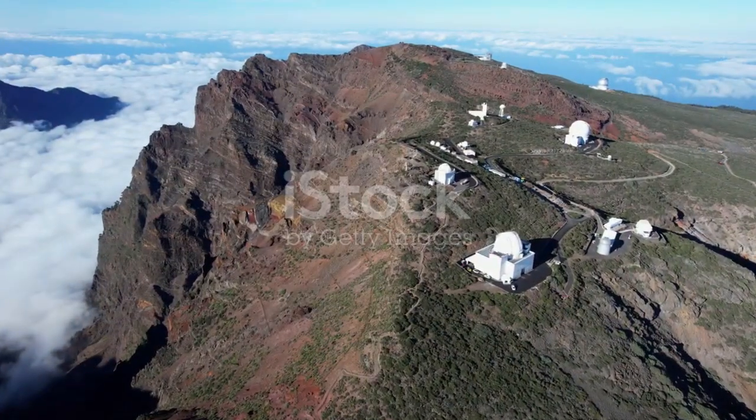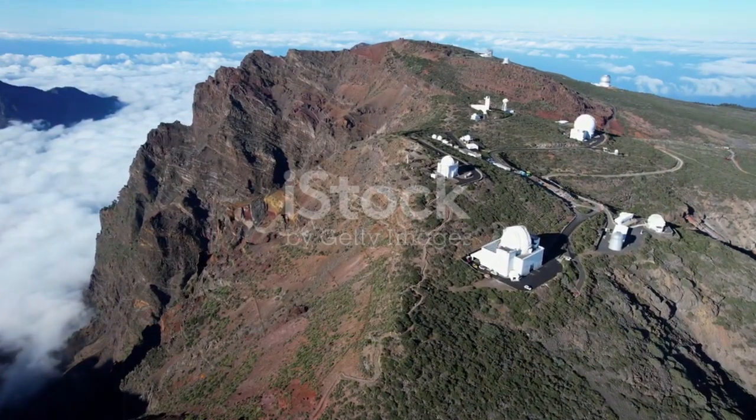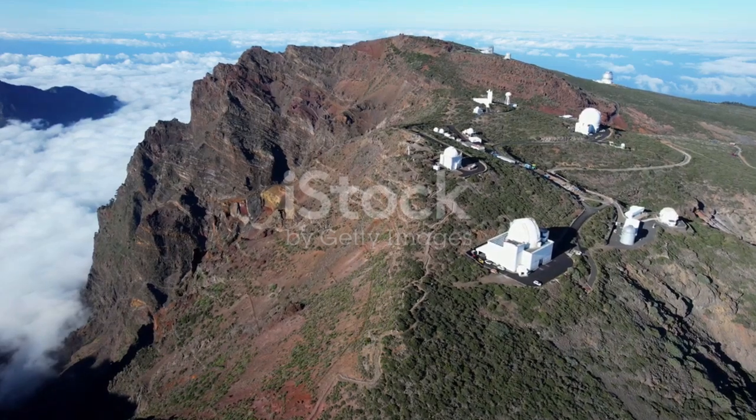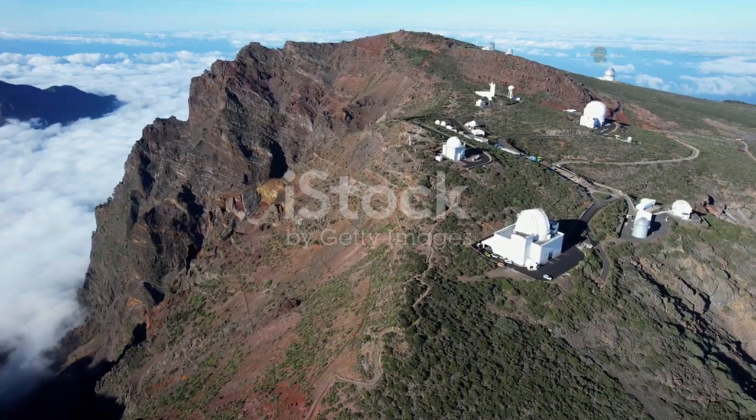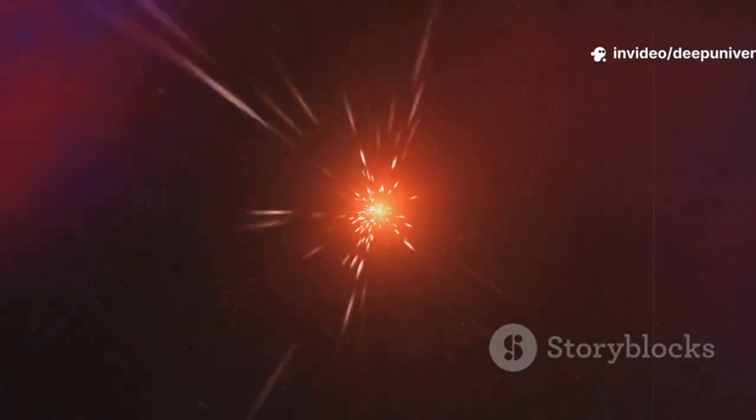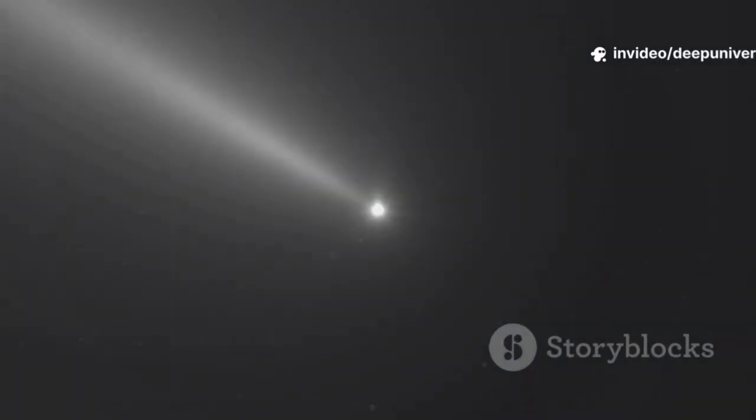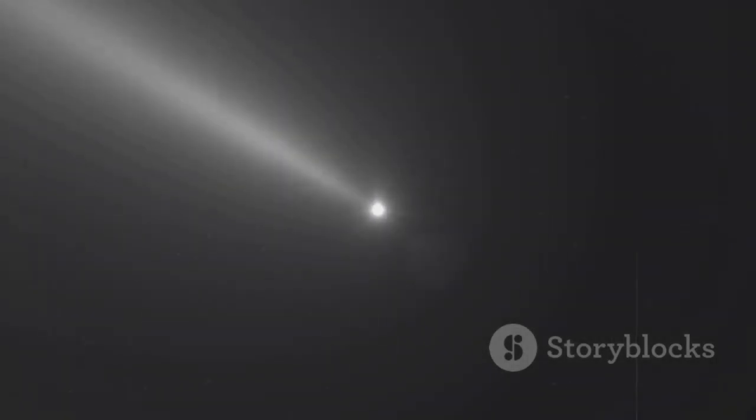In July 2025, Hawaii's ATLAS system flagged a faint point of light, initially cataloged as just another asteroid, one of many in our solar system. But its hyperbolic path revealed it was moving too fast to belong to our solar system, defying the gravitational pull of our sun. This was a visitor from interstellar space, only the third ever detected, a rare and thrilling discovery for astronomers. Officially named 3i Atlas, it quickly became a scientific sensation, capturing the imagination of scientists and the public alike.